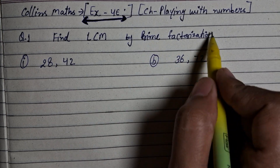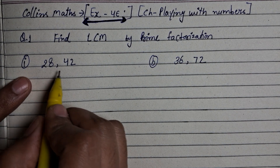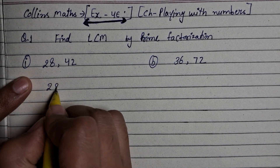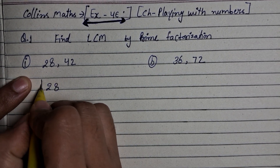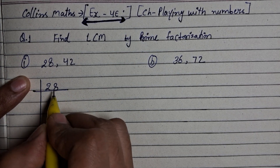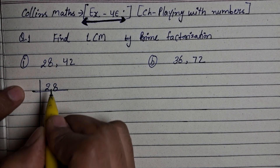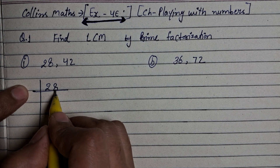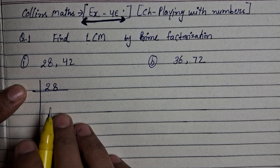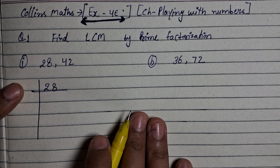Now how do we do prime factorization? The first question is to find LCM. So here we have 28 and 42. Which is divisible? By 2. We have to find out, so you should know the divisibility rule — that has also been told, watch the video.